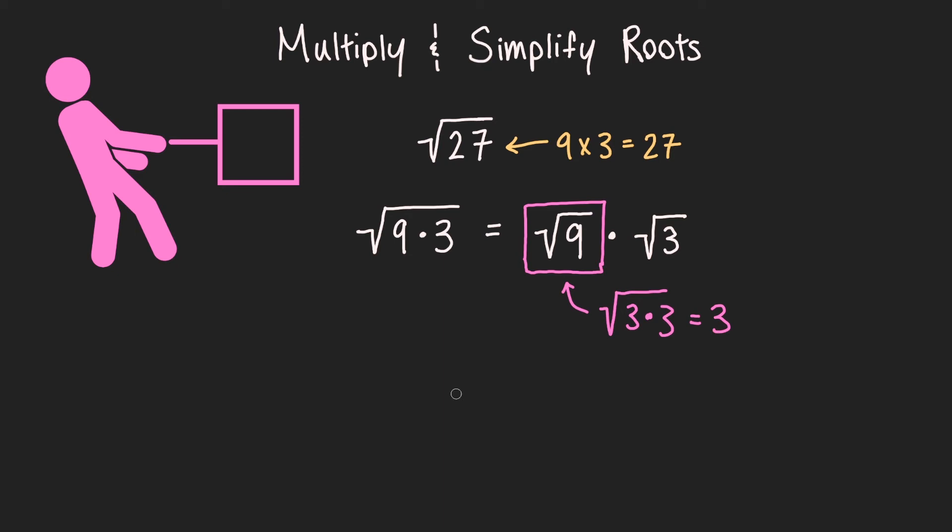And now, let's multiply back in the other root of 3. And by the way, this 3 and the square root of 3, they're being multiplied together. But I didn't draw a multiply sign in between them, and that's totally okay and what I love about roots.